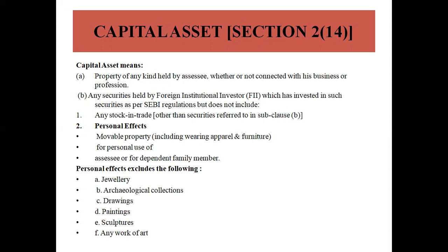Capital assets do not include stock in trade other than securities referred to under sub-clause B. Also excluded are personal effects such as wearing apparel, furniture for personal use of the assessee or dependent family members. Personal effects include jewelry, archaeological collections, drawings, paintings, sculptures, and works of art.